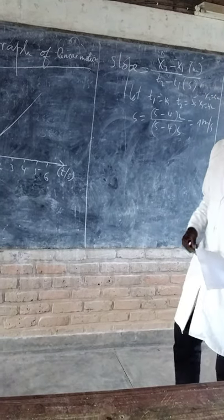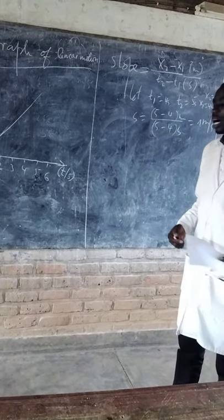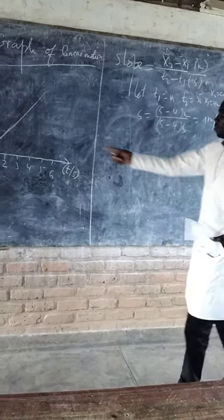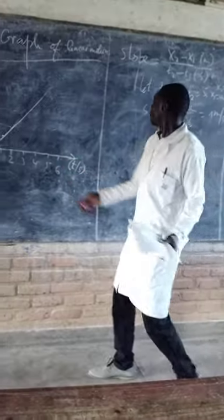Then you find 1 meter per second. Our slope is velocity, which is equal to 1 meter per second from the graph.